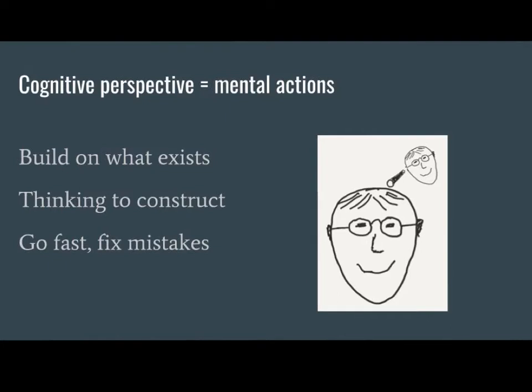Some tolerance of failure is actually important. If a cognitive skill such as reading comprehension were to proceed so slowly that no misinterpretation of phrases or sentences ever occurred, the information would come in so slowly that keeping track of ideas would be nearly impossible. In many cognitive skills we must go fast and then fix our mistakes.